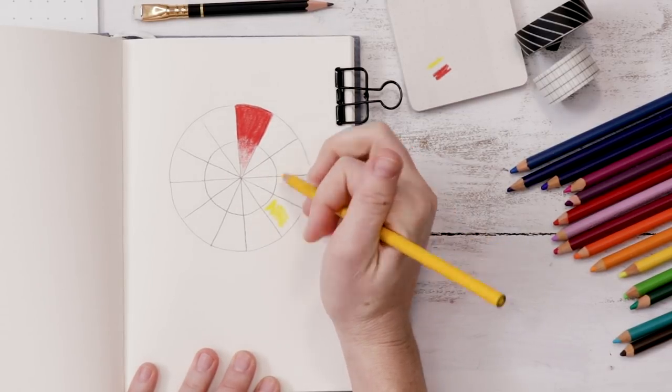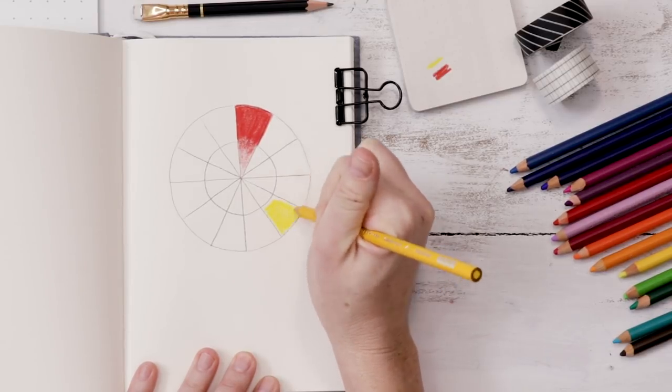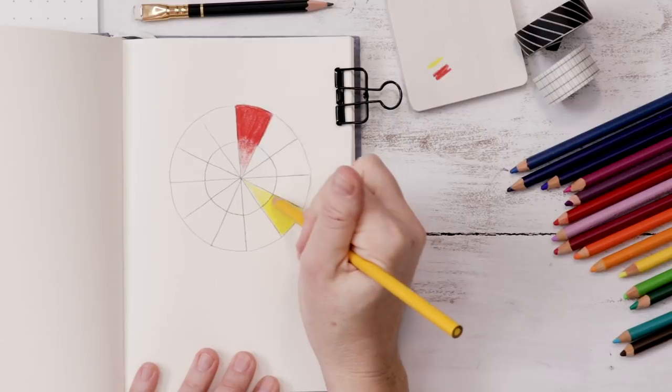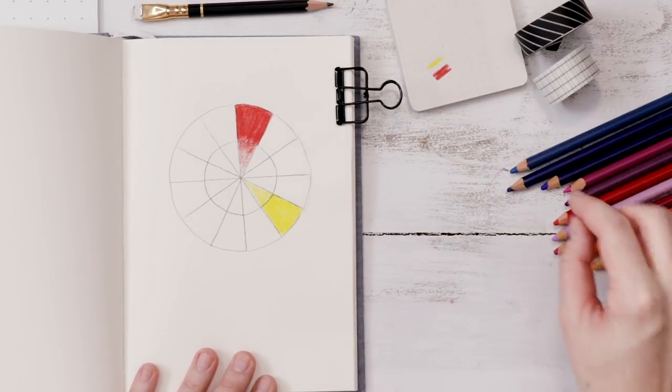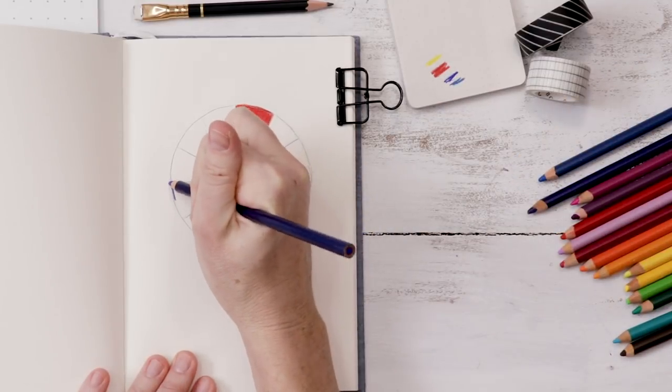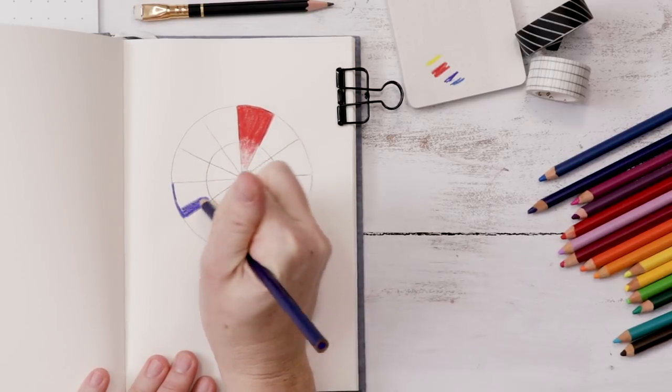After you color in the red, we're going to move over, leave three sections in between, and then we do our yellow. And our third primary color, moving over another three sections on the wheel, is blue.